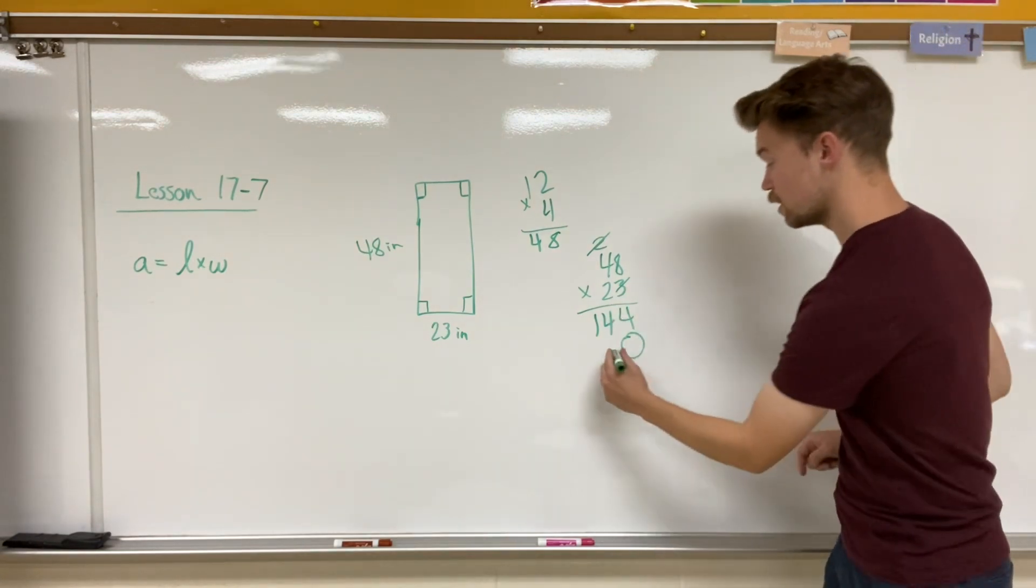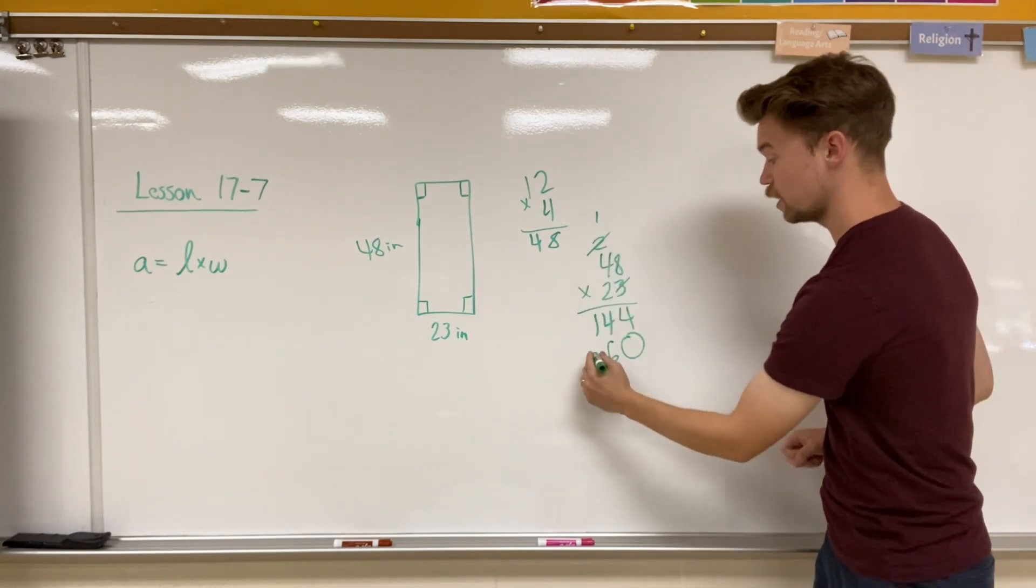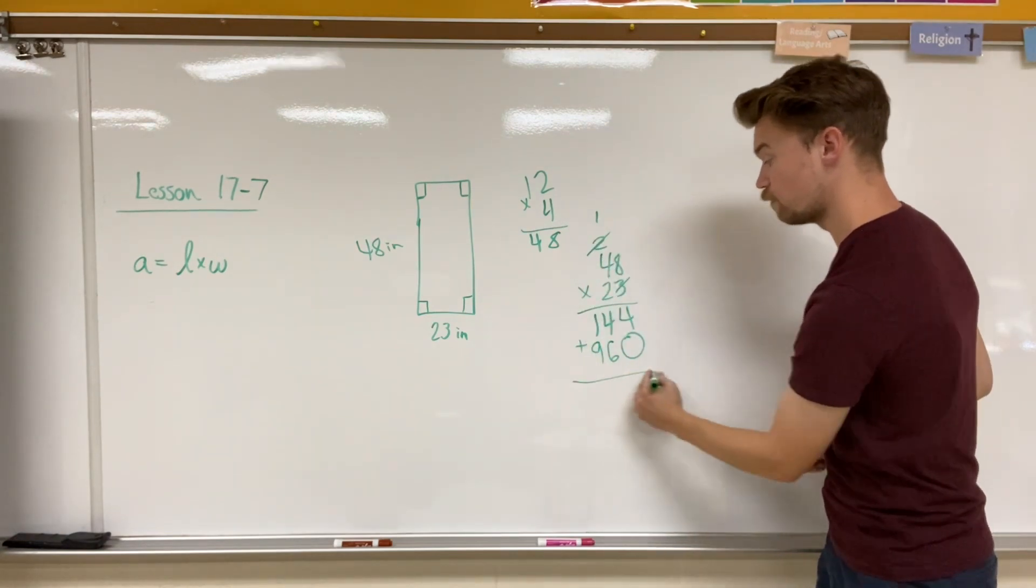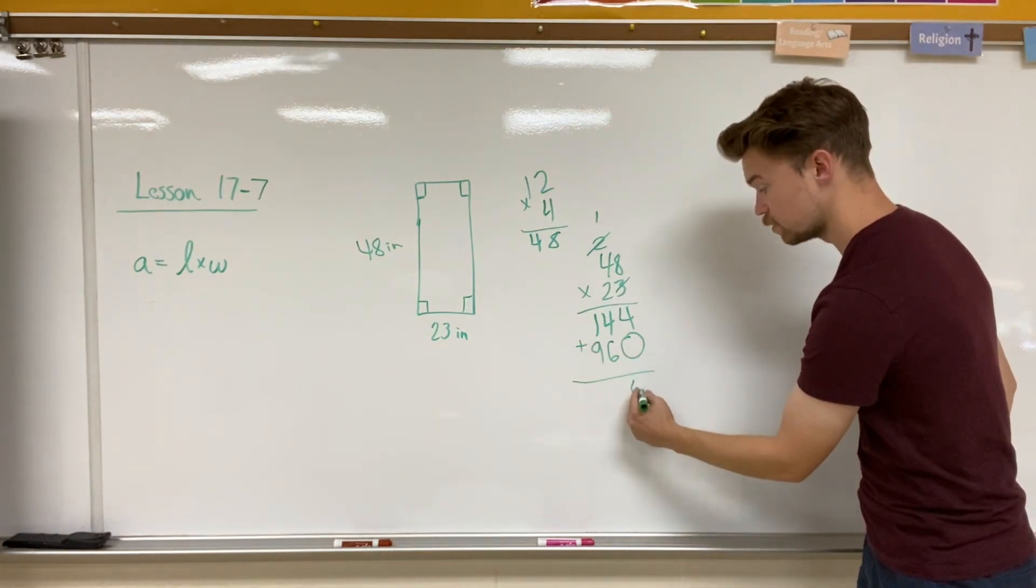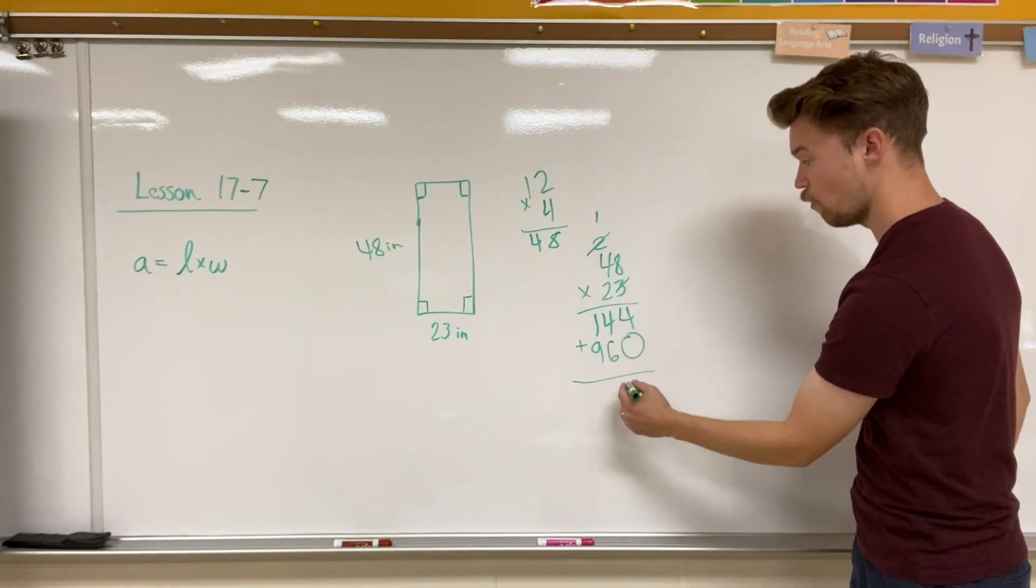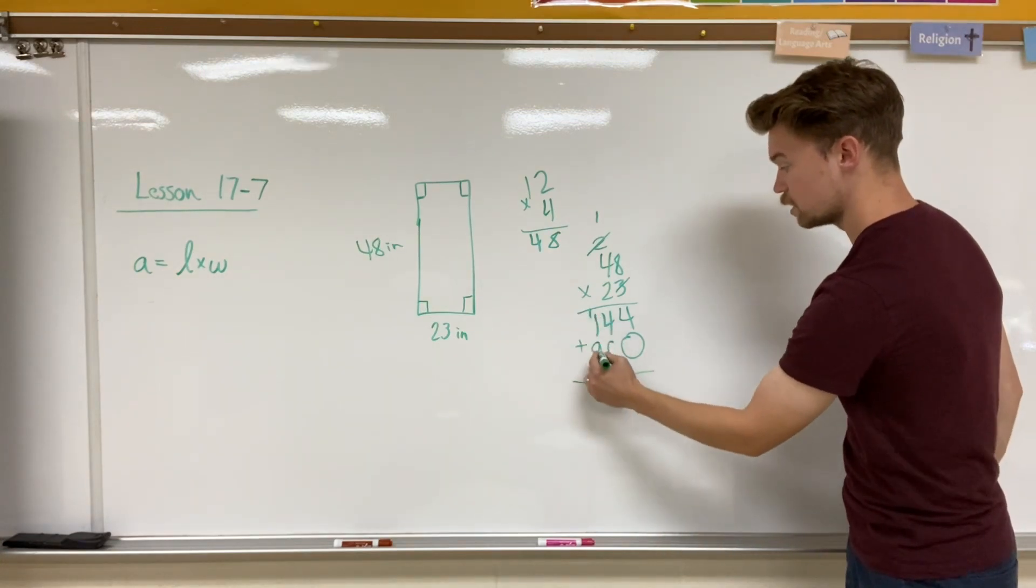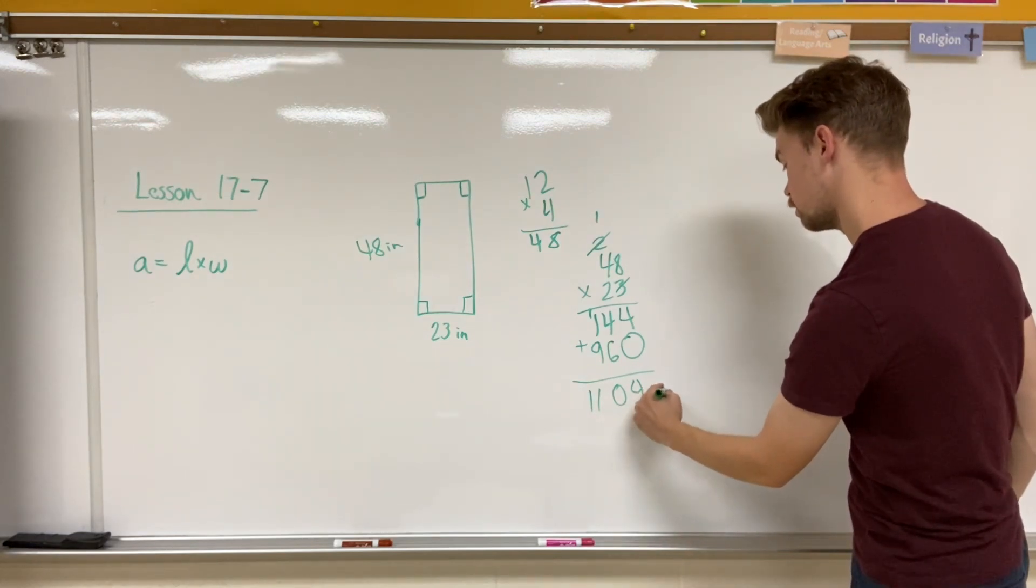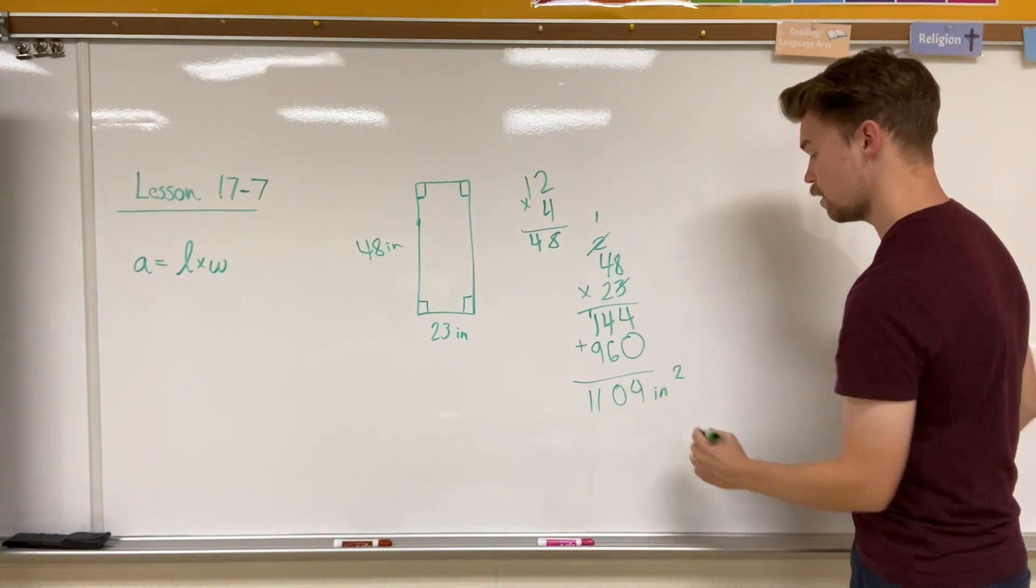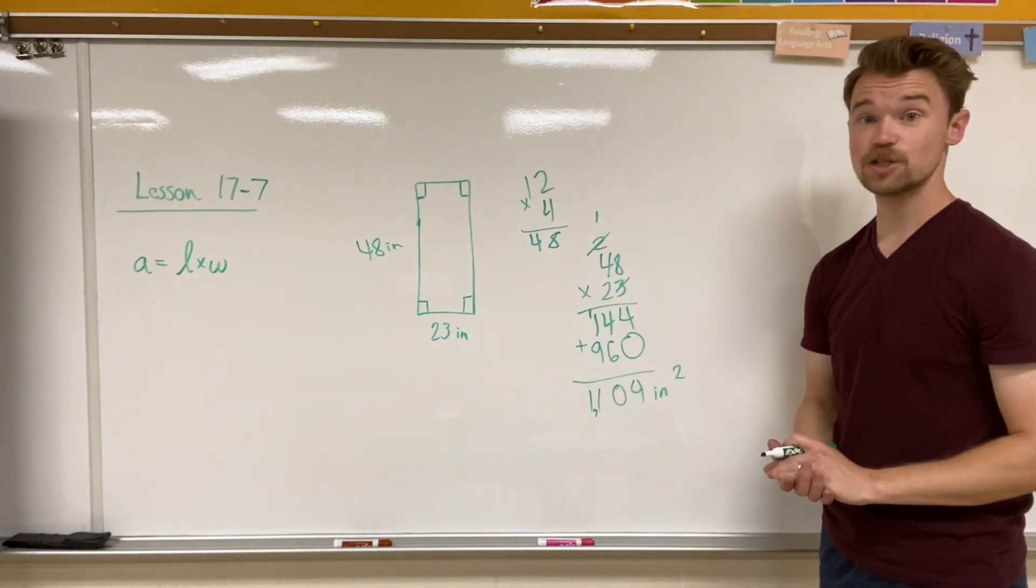Now two times eight is 16. Carry my one up here. Two times four is eight plus one is nine. I'm going to add 144 to 960. So four plus zero is four. Six plus four is 10, carry the one. And nine plus one plus one is 11. Now I'm going to put inches and I'm going to put square. So I have 1,104 squared inches.